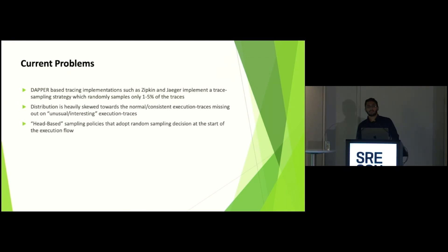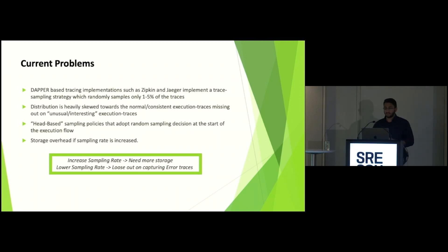As for the implementation, the tracing that is implemented is a head-based sampling. That is right at the start of the implementation, the trace is determined if it will be qualified for storage or persistent or not. So we just eliminate that at the beginning because it does not fall in that 1 to 5% category. Next is the storage overhead if sampling rate is increased. So we are kind of in a dilemma. Increase the sampling rate, you need more storage. Lower the sampling rate, you tend to miss out on the unusual traces.